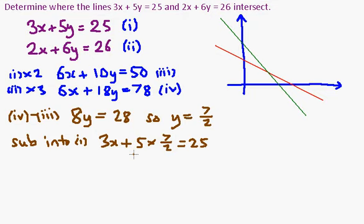So 5 times 7 halves is 35 halves. I'm going to take 35 halves from both sides, and you should be able to get 15 halves. So x is 15 halves divided by 3, which is 5 halves.